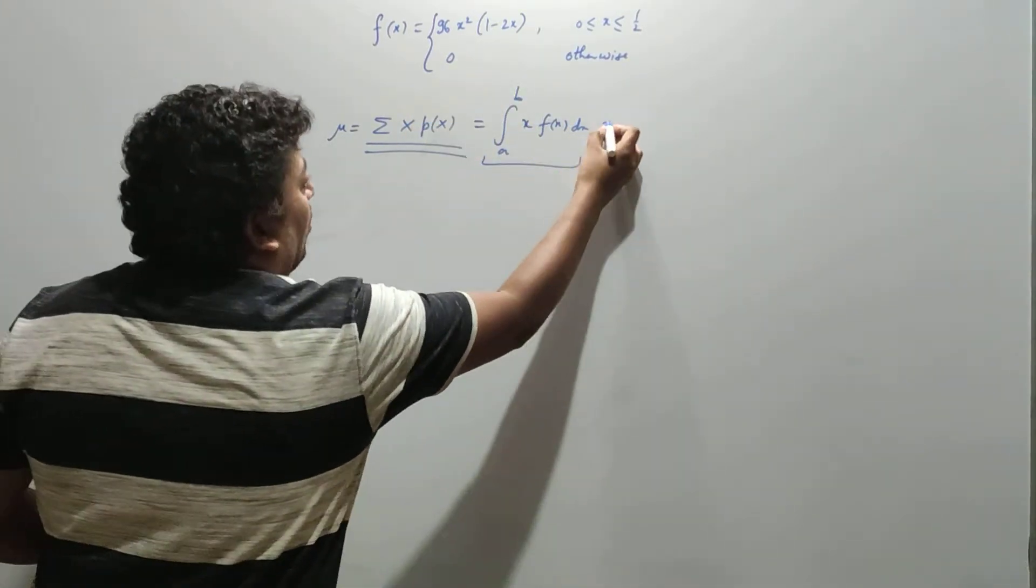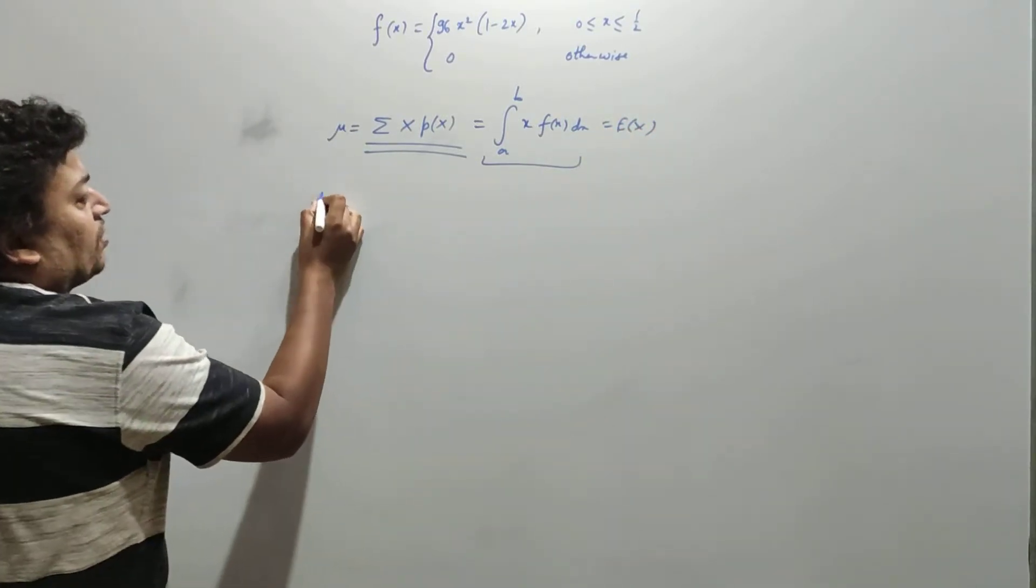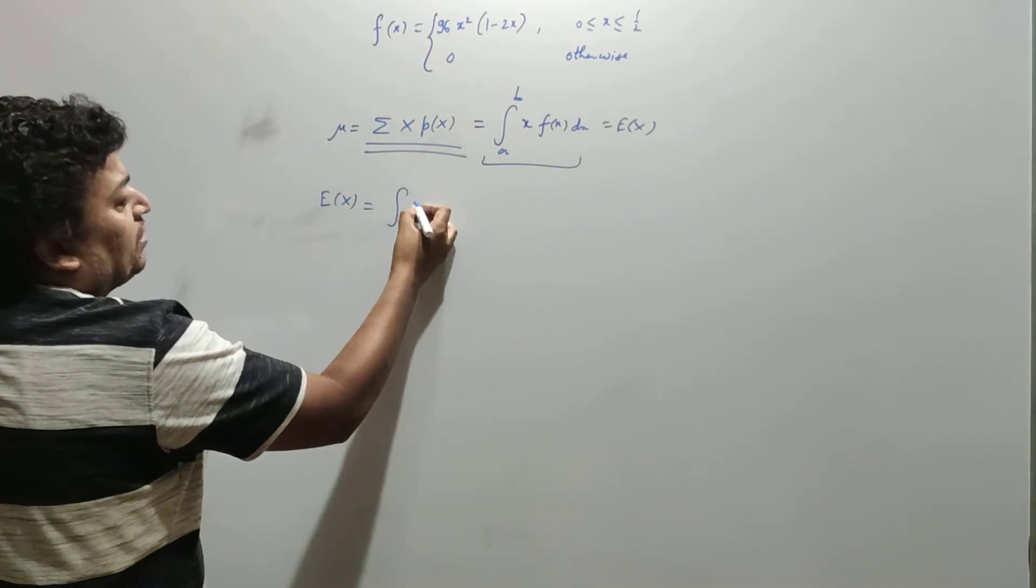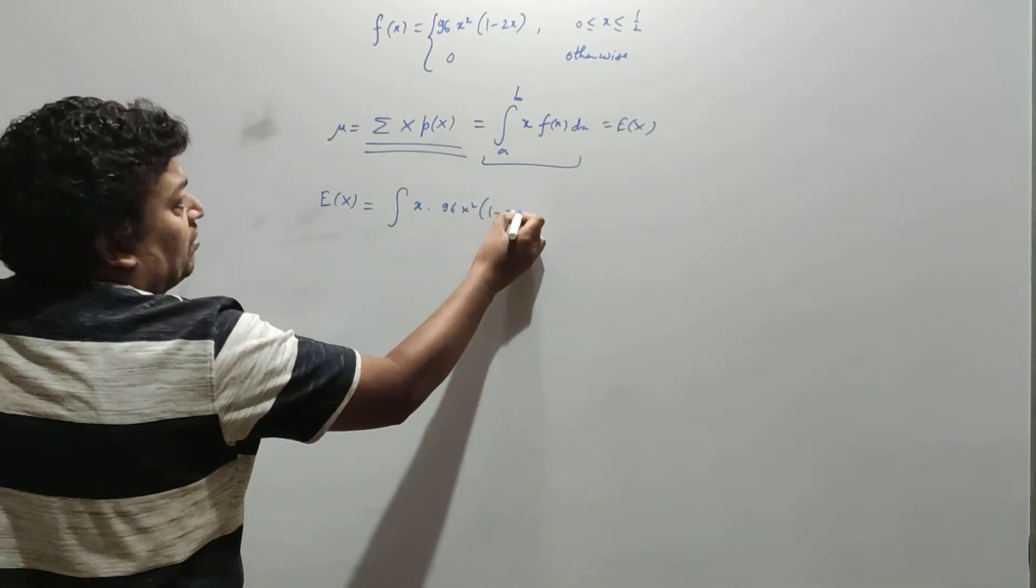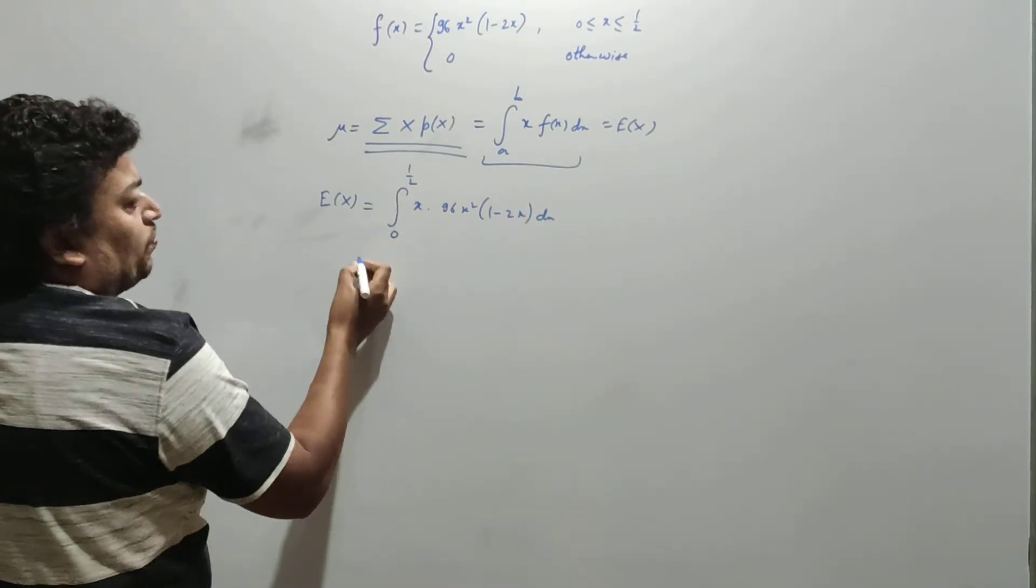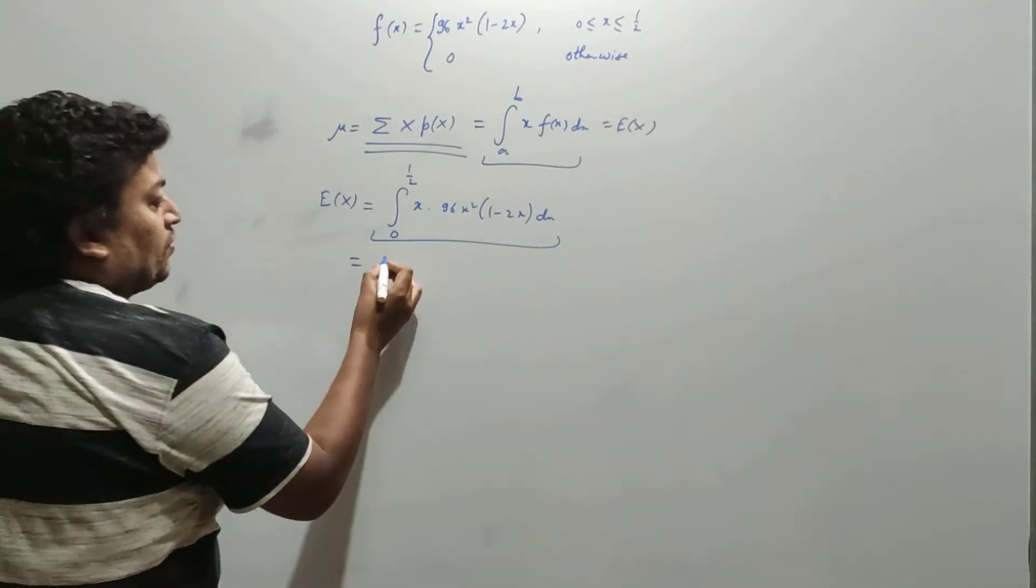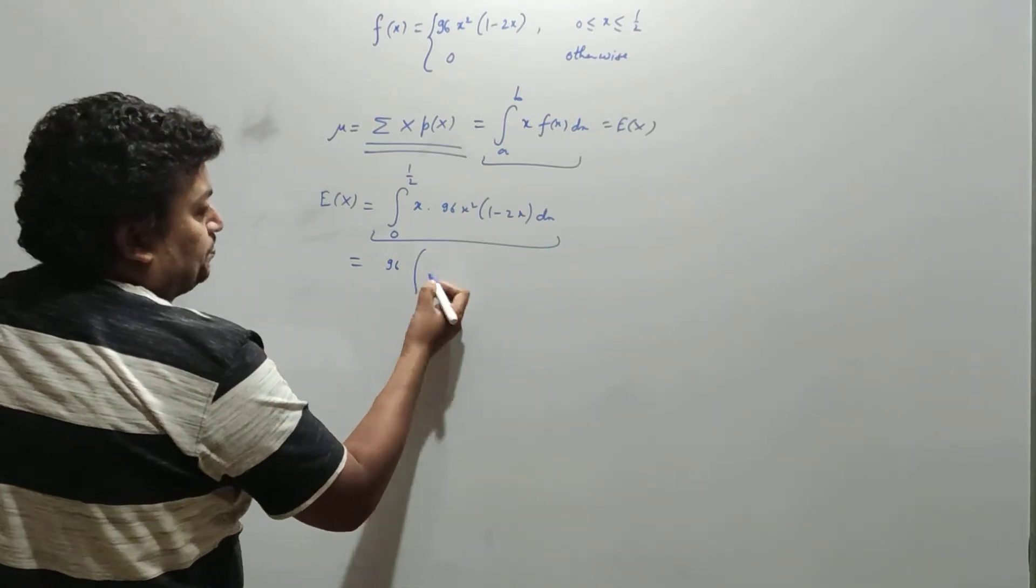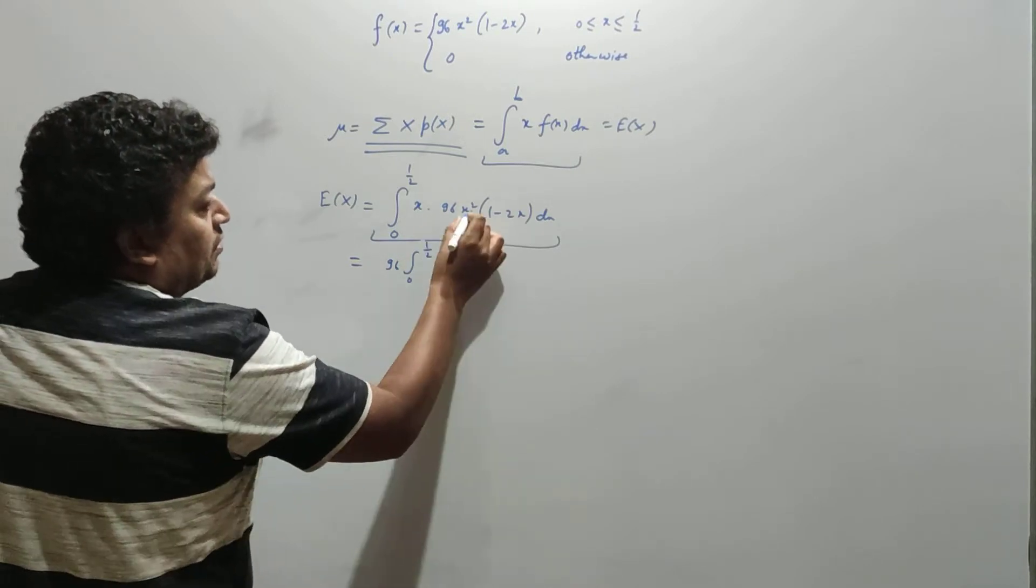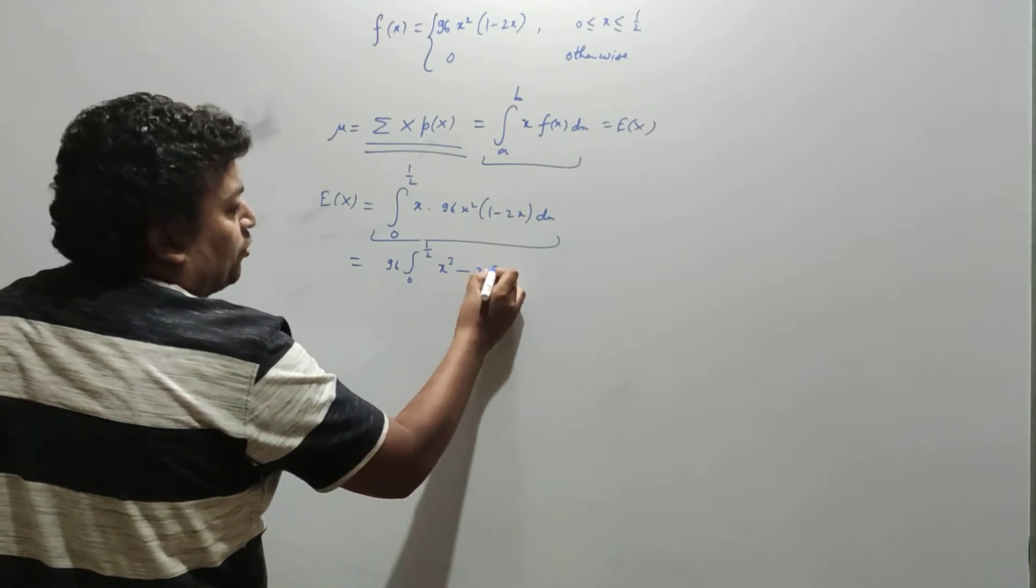So it's the integral from initial to final point of x·f(x)dx. That will be your μ or expectation. In this case, expectation equals the integral from 0 to 1/2 of x·96x²(1-2x)dx. So it's 96 times the integral of x³ - 2x⁴ dx from 0 to 1/2.